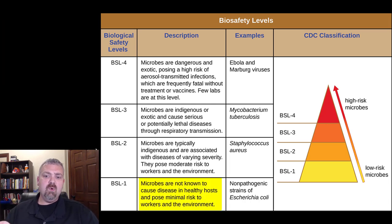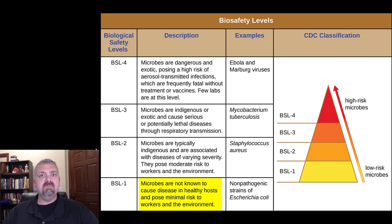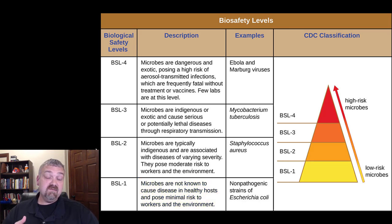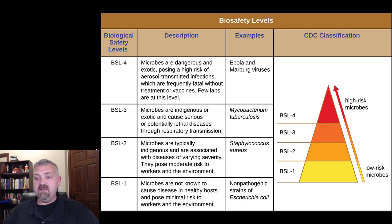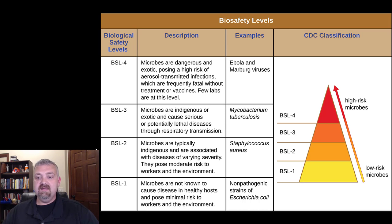BSL 1: microbes are not known to cause disease in healthy hosts and pose minimal risk to workers and the environment. The example here is non-pathogenic strains of E. coli. Obviously E. coli O157:H7 or the other enterohemorrhagic strains of E. coli would be much higher up on the list, but these are the ones you really don't need to be super concerned with.